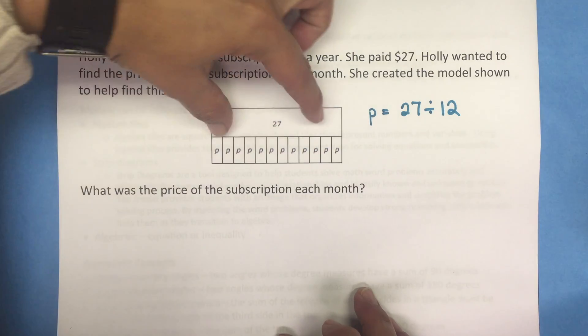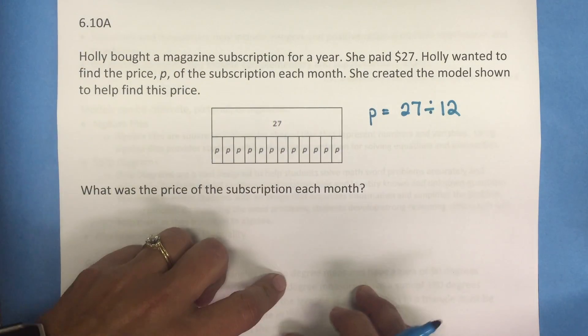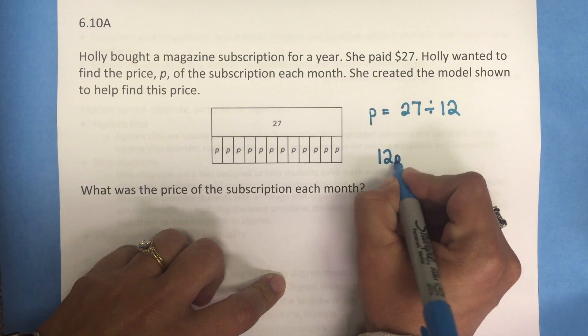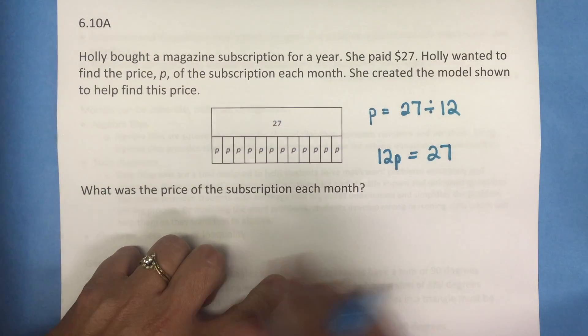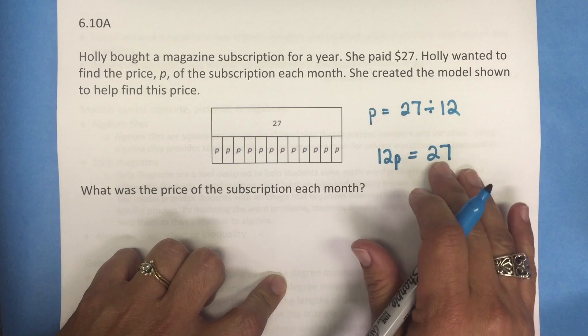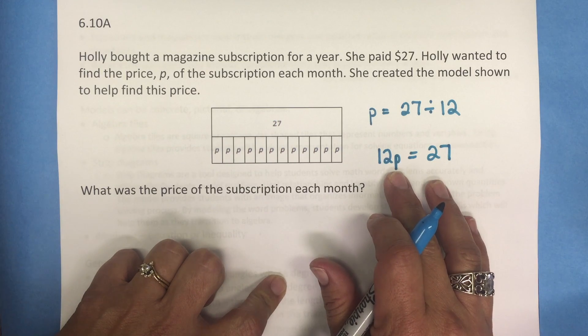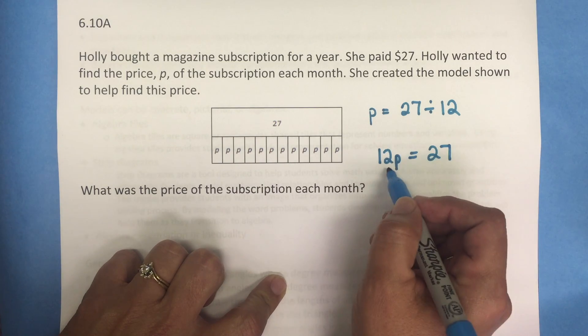Other students might look at this and say, oh well, there's 12 P's total and those 12 P's equal 27. So from this one-step equation, the students would have to isolate the variable P by doing the opposite of multiplying by 12, which is dividing both sides of the equation by 12.